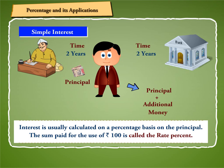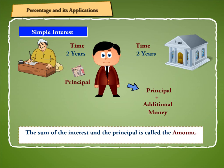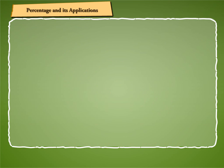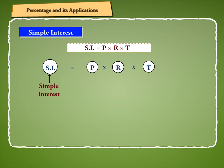Interest is usually calculated on a percentage basis on the principal. The sum paid for the use of Rs. 100 is called the rate percent. If this rate percent is calculated for a year, it is called the rate percent per year or per annum. The sum of the interest and the principal is called the amount. The simple interest can be calculated by using the formula SI = P × R × T, where SI, P, R, and T stand for simple interest, principal, rate, and time respectively.